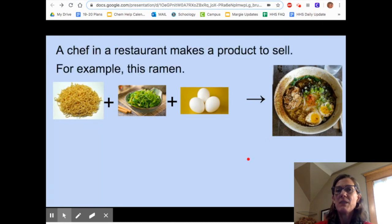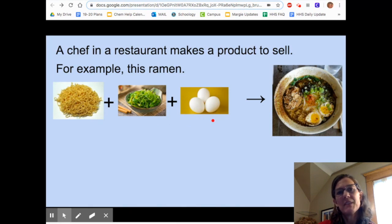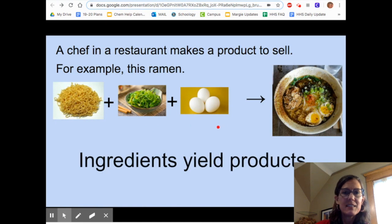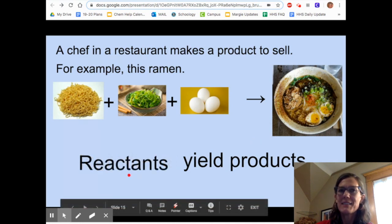A chef in a restaurant makes a product to sell. For example, this ramen would be the product that people would want to buy. And the ingredients are over here showing what he had to start with. So ingredients yield products in cooking, but in chemistry, we don't say ingredients. Instead, we say reactants. Reactants yield products.